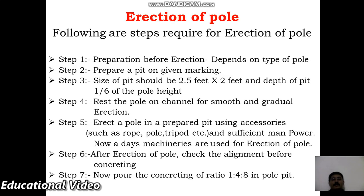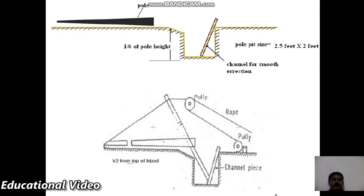The method of erection of a pole follows these steps: first, prepare the pit based on the type of pole. The pit size should be 2.5 by 2 feet, with depth equal to one-sixth of the pole height — for a 6-meter pole, that is 1 meter depth. Then erect the pole using accessories and sufficient manpower or machinery. Check alignment before pouring concrete in a ratio of 1:2:4 in the pole pit.